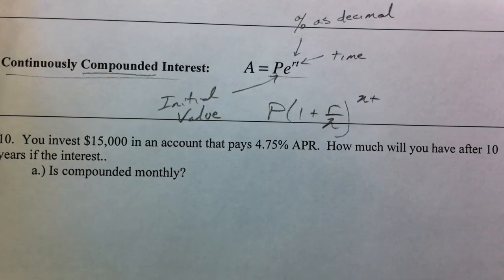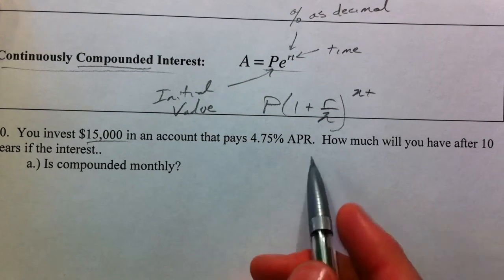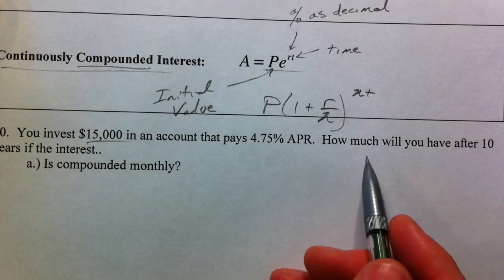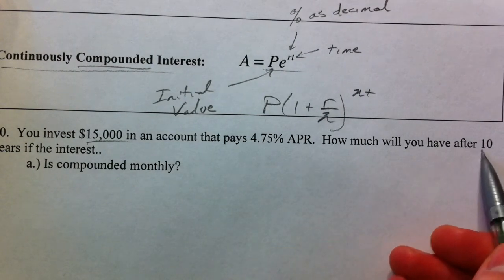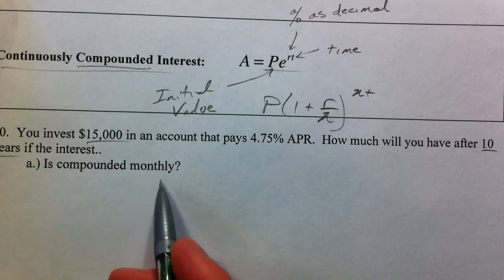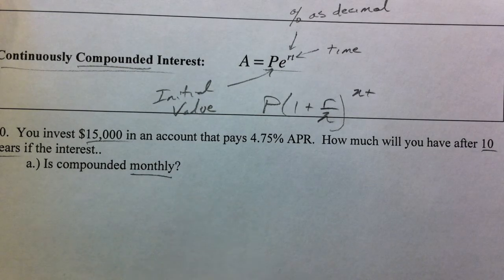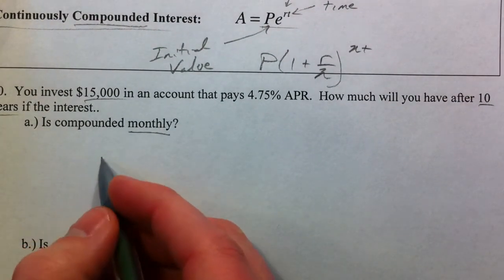So, you invest $15,000 in an account that pays 4.75% APR. How much will we have after 10 years if the interest is compounded monthly, and compounded continuously? We're going to deal with both equations.